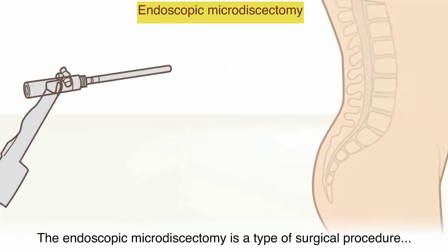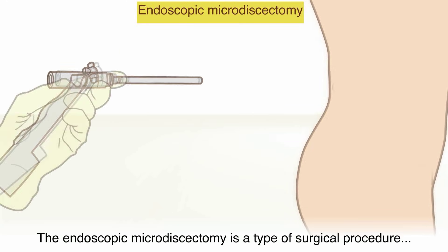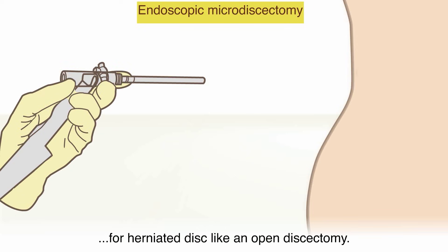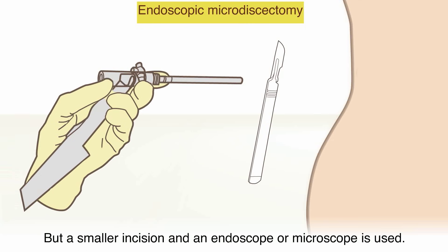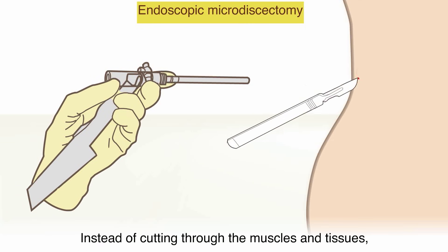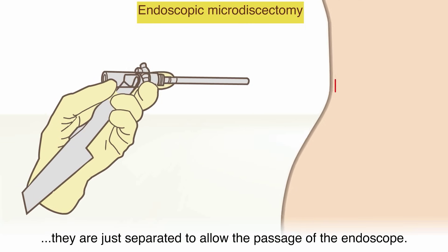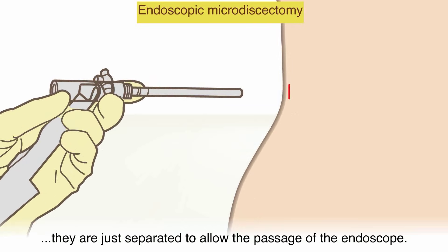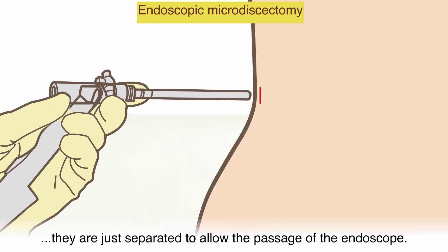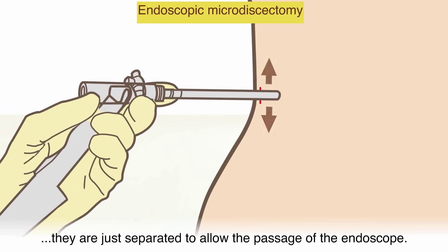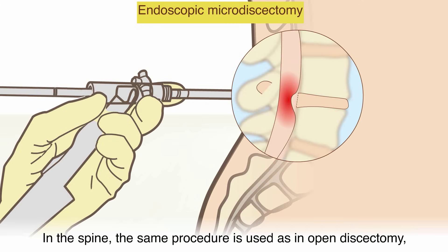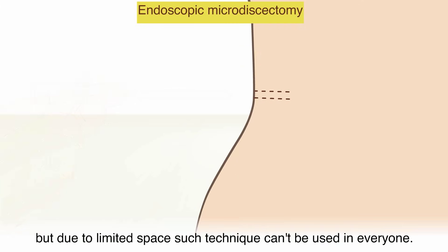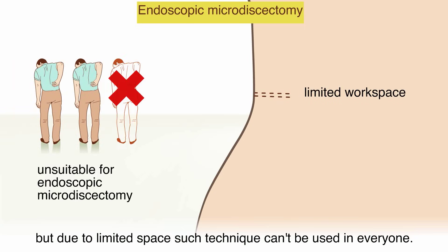Endoscopic microdiscectomy is a type of surgical procedure for a herniated disc, like an open discectomy, but a smaller incision and an endoscope or microscope is used. Instead of cutting through the muscles and tissues, they are just separated to allow the passage of the endoscope. In the spine, the same procedure is used as in open discectomy, but due to limited space, such technique can't be used in everyone.